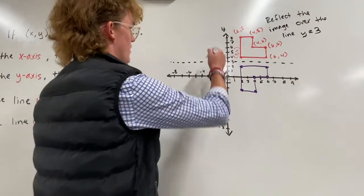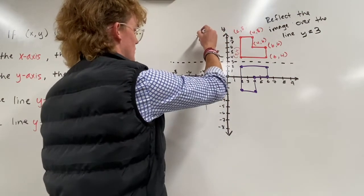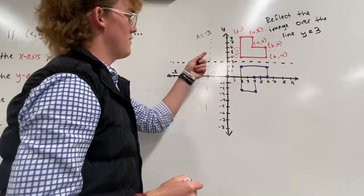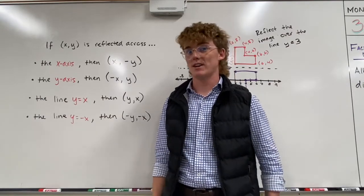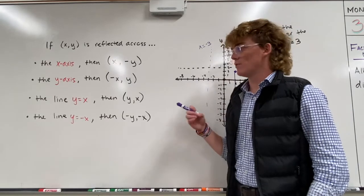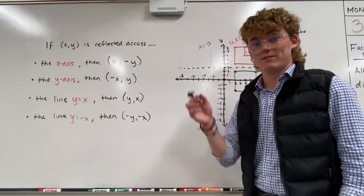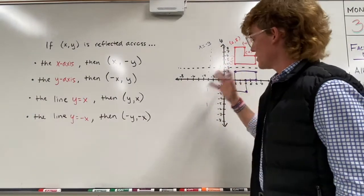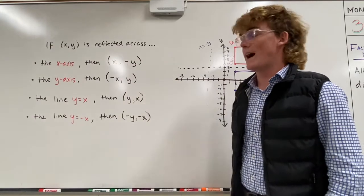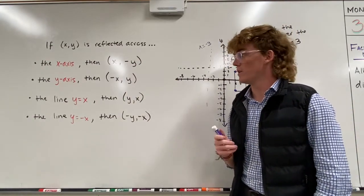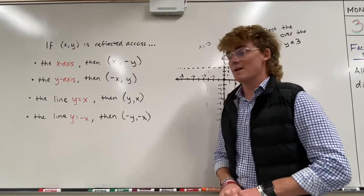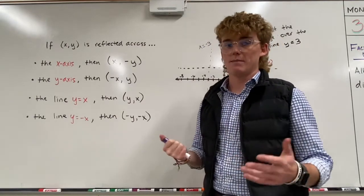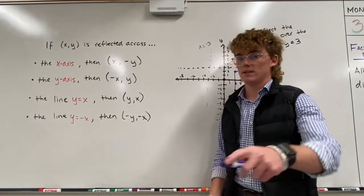The same steps apply when reflecting over a line like x equals negative 3 — count how far away you are from the line of reflection and then flip over. That's all for today's video. It's a bit more intense than yesterday because you have to count, but with practice it'll become faster. You may even be able to draw the reflection just by sight. Keep memorizing those four patterns — that'll help a lot on quizzes and tests. You'll have an assignment either on Delta Math or through Google Classroom.